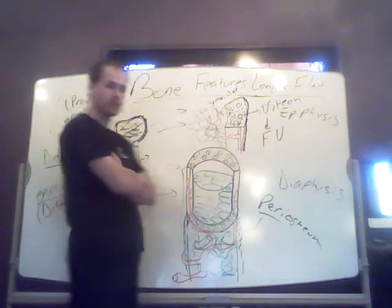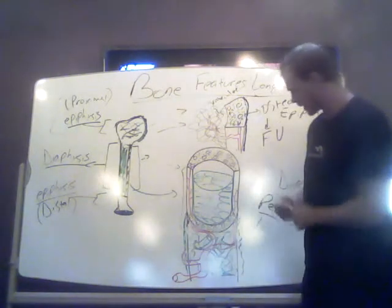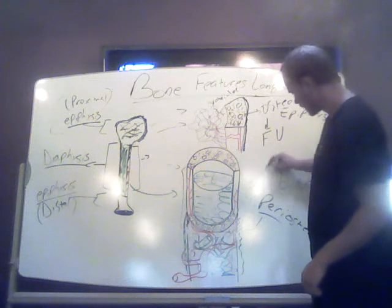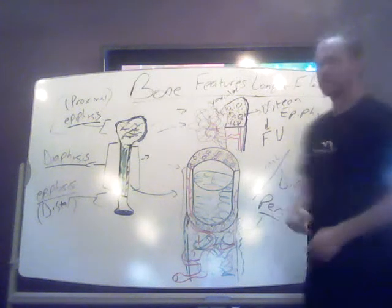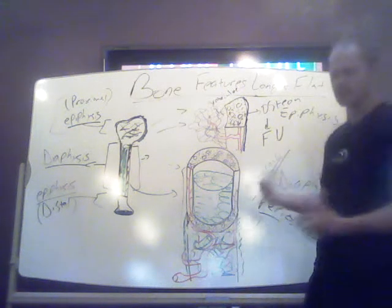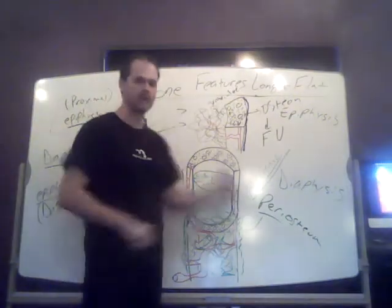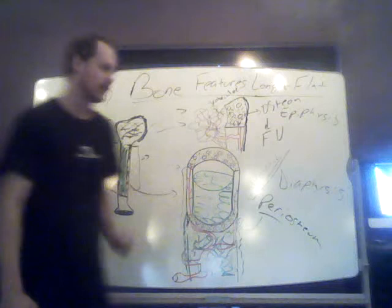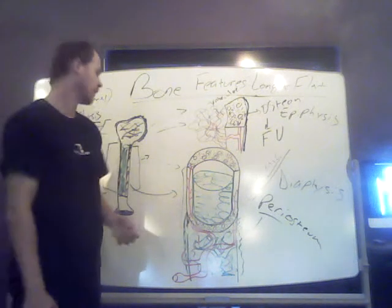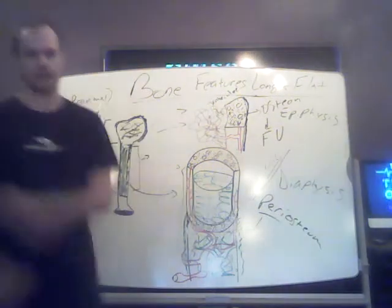The periosteum is also important because there are cells on the underside of the periosteum called osteogenic cells. Genic meaning to make or create — these cells help us heal bone tissue if we break it. So the periosteum plays a very important role in healing fractures, in part because of the vessel network and because of the osteogenic cells within it.